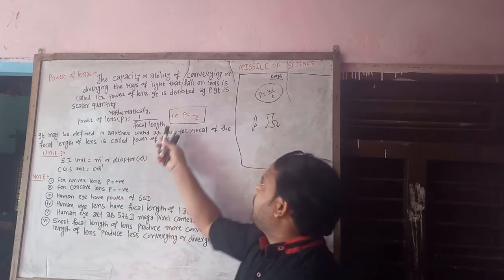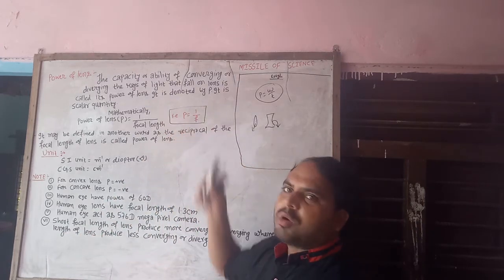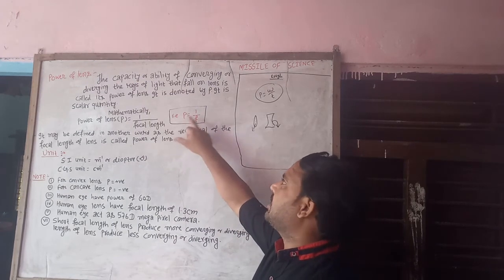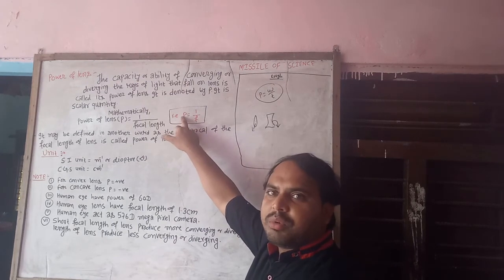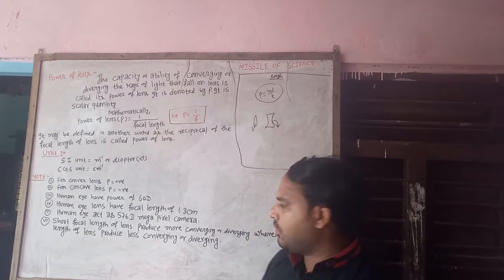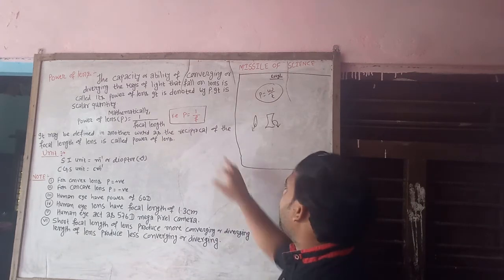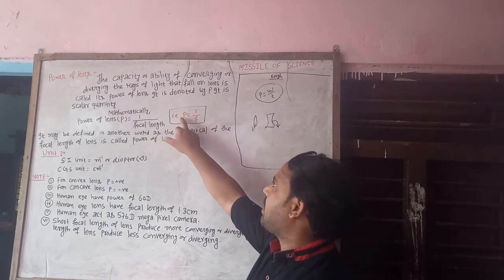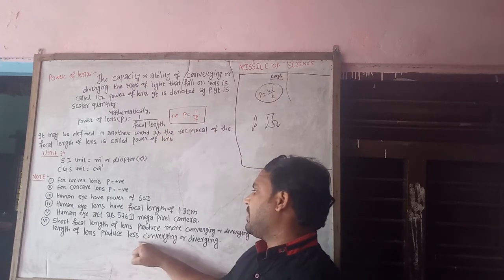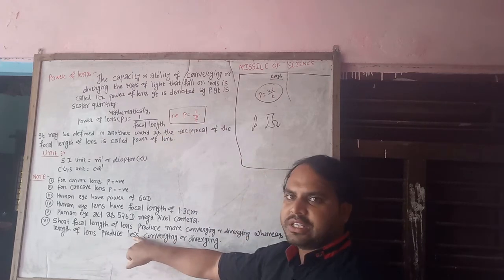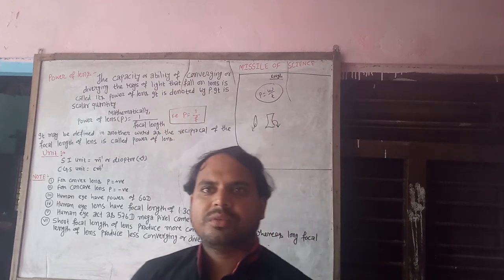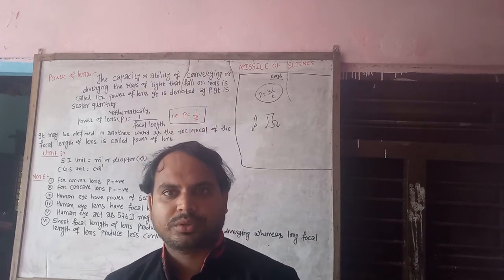When you look at focal length, power and focal length are in inverse proportion. If the focal length is more, then the power is less — they are inversely related. So power is always the reciprocal of the focal length: P = 1/f.